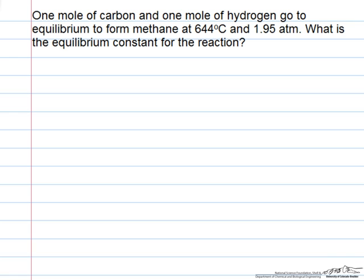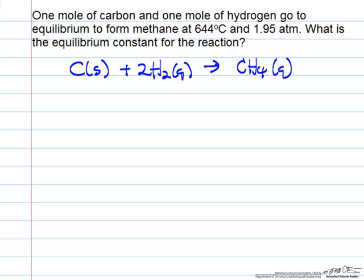In this problem we have a chemical reaction: a mole of carbon and a mole of hydrogen react. Carbon is a solid in these conditions. We want to know the equilibrium constant. The equilibrium constant is going to be related to delta G, so we can calculate delta G at 298 standard conditions as delta G's of formation of the products minus reactants.